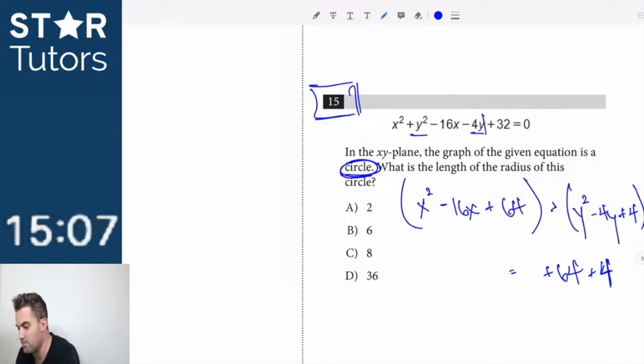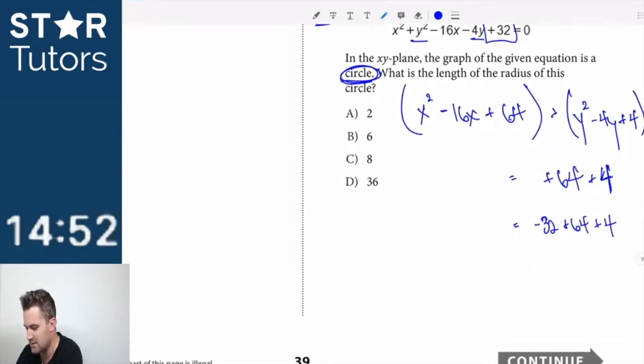Sorry, then we have plus 32. So plus 32, so we get 64 plus 4. I'm going to subtract the 32 on the other side, so this should be negative 32 because we want all of our constants on one side. Plus 64, plus 4, I'm confusing myself, this isn't that hard of a question.